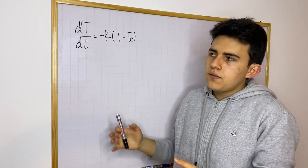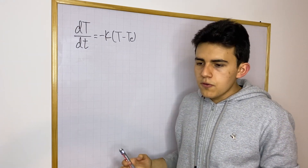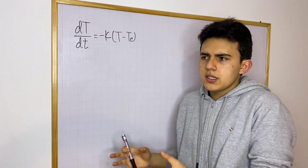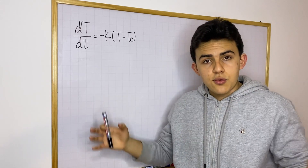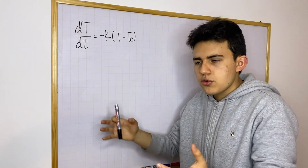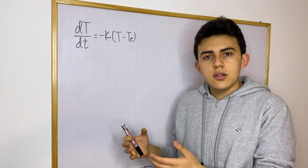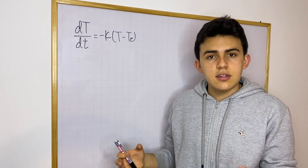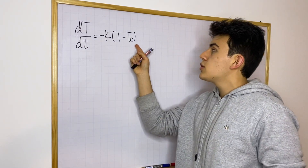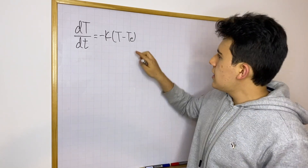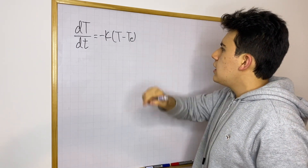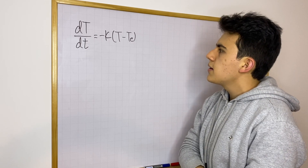Now in this context, T sub e is going to be the external temperature. We use this differential equation when we have some object and we want to create a function for temperature with respect to time for that object. We also know the temperature of the environment surrounding that object. So say you leave some object on a table — the air surrounding it is its surrounding environment, and that temperature value is T sub e.